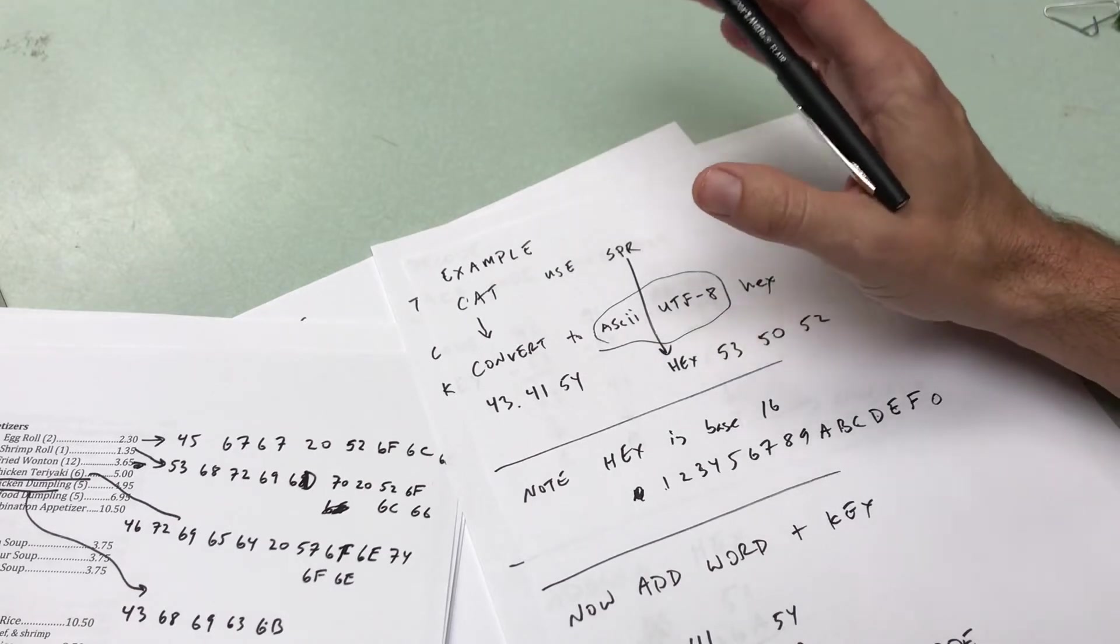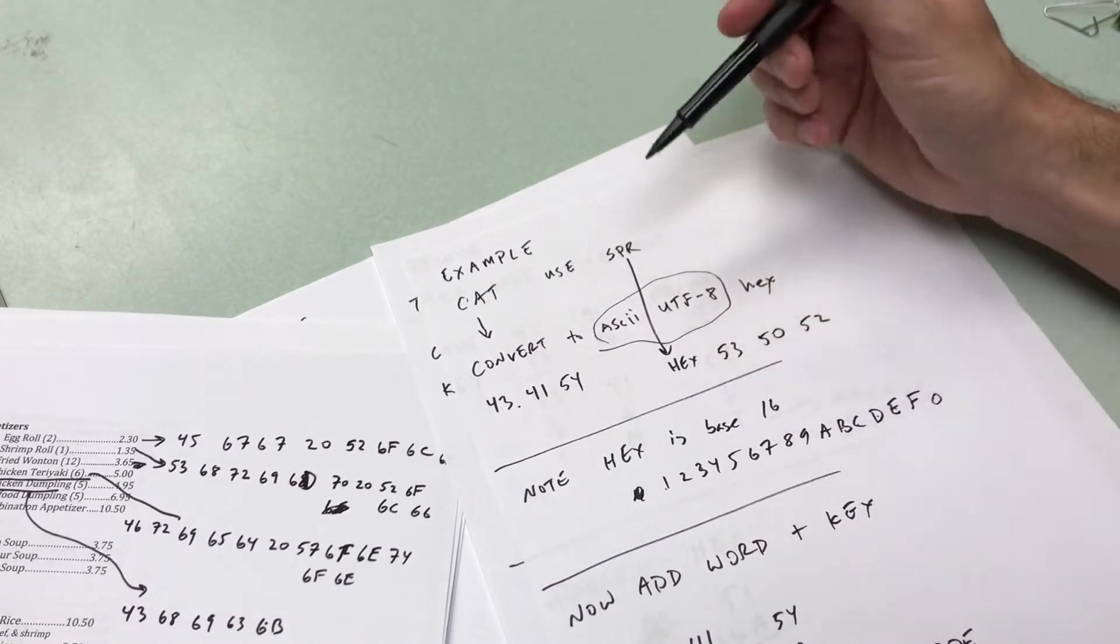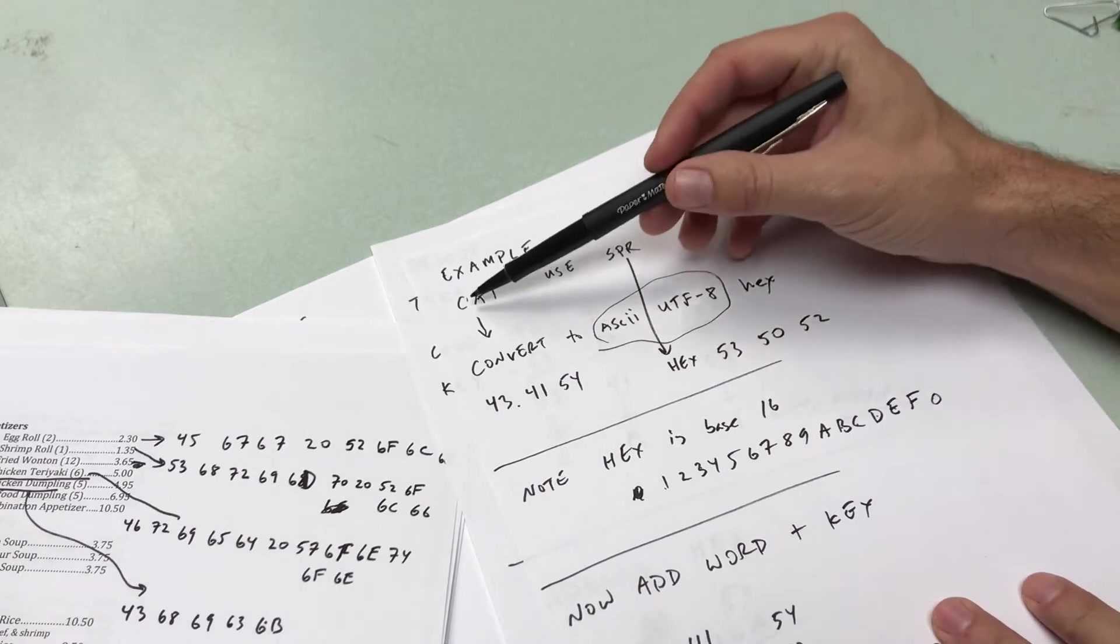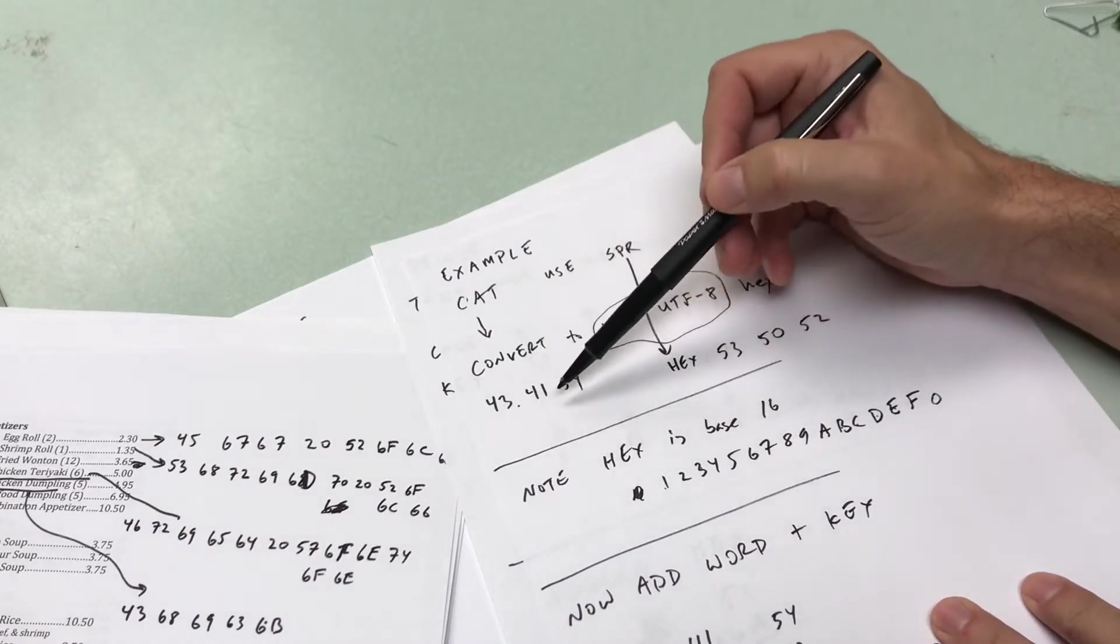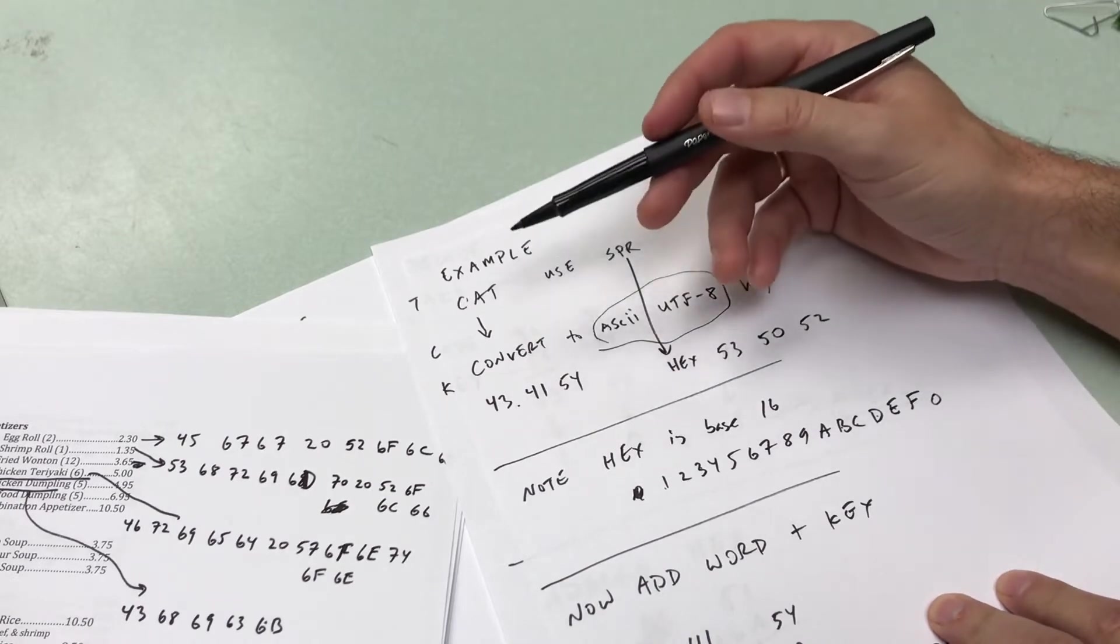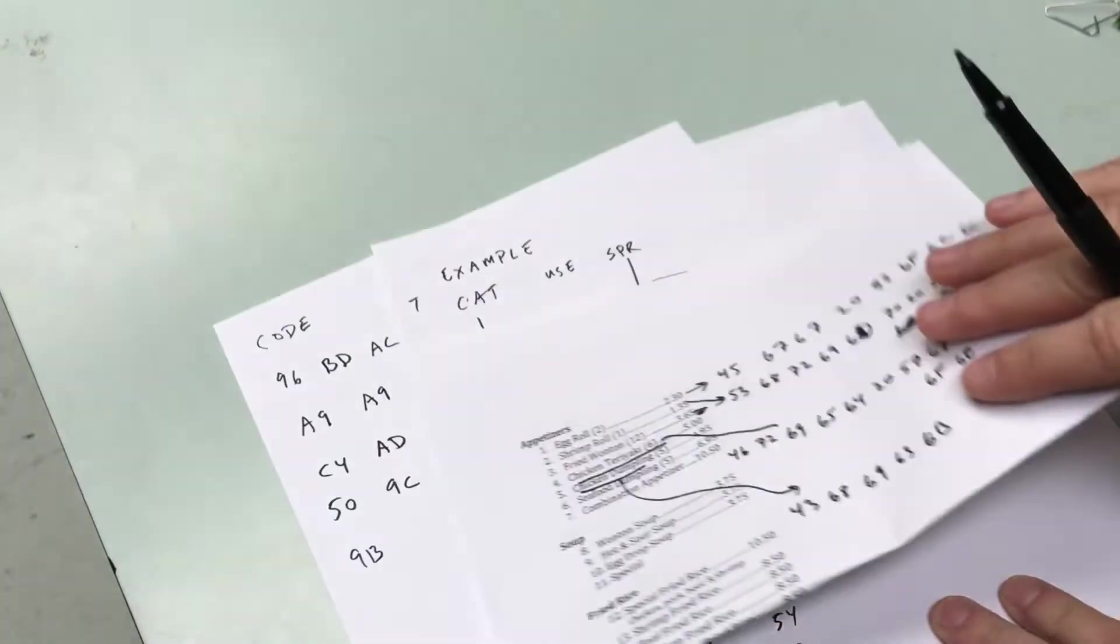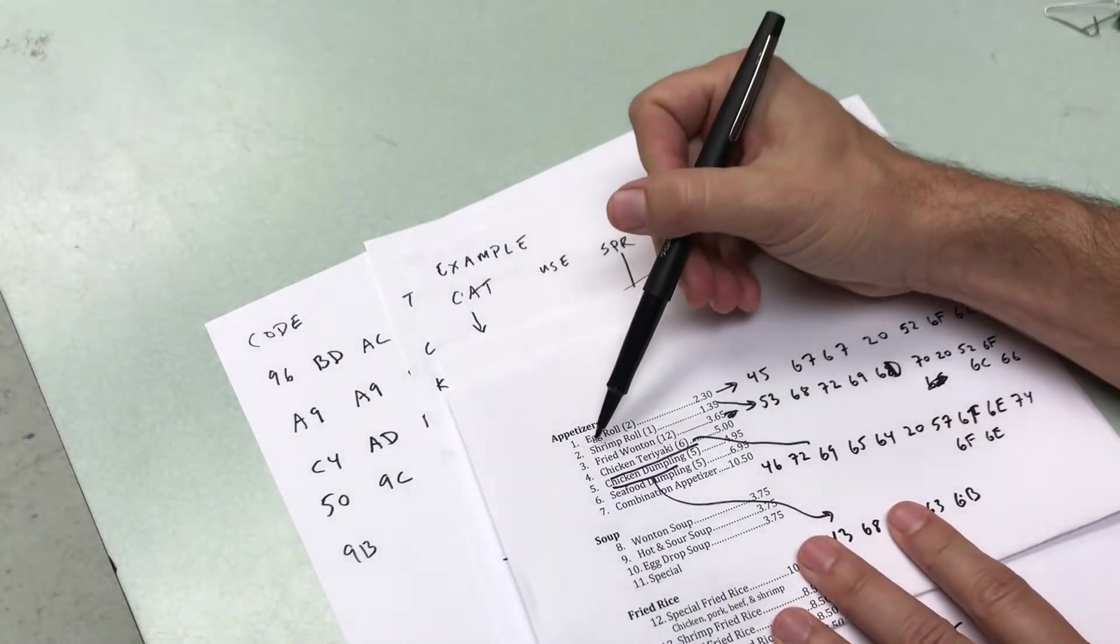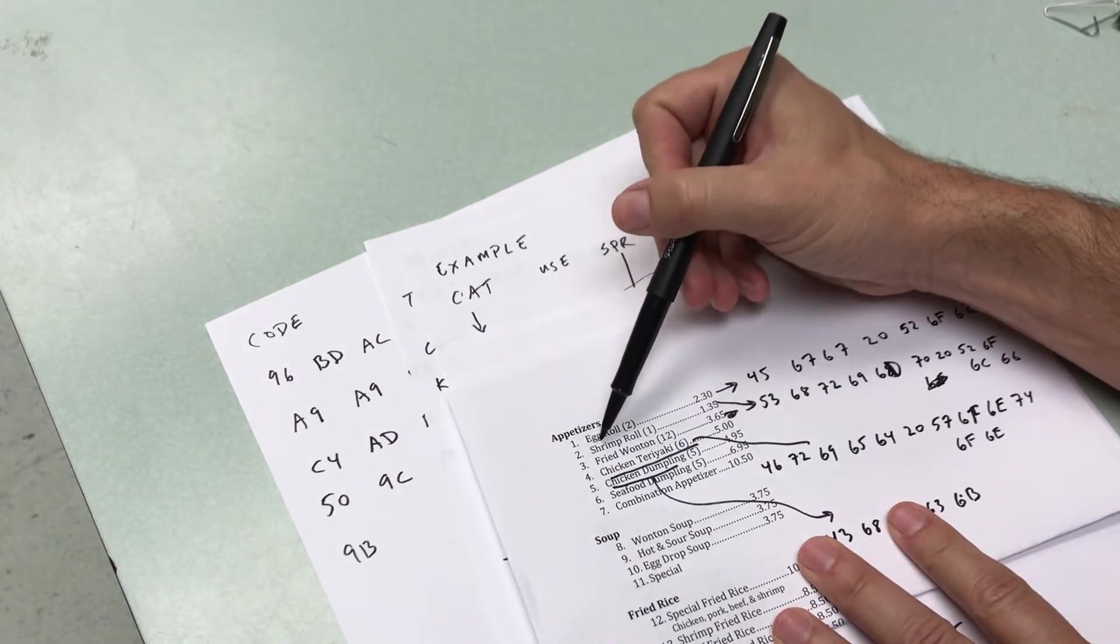That's not decimal, that's hexadecimal. So next, that's my text. It's not encoded. It's ASCII, it's plain text. Now I'm going to take my, I'm going to take the first word here, egg. Actually, I use spring for spring roll.